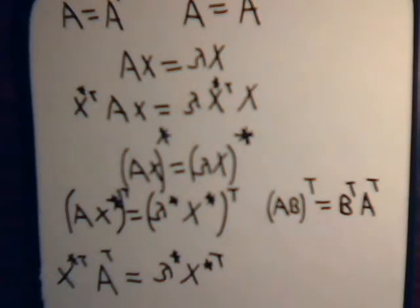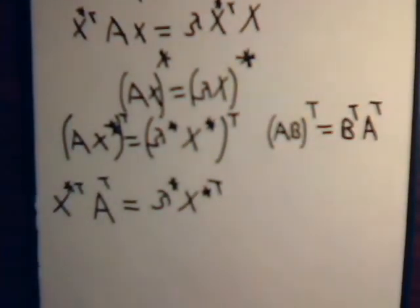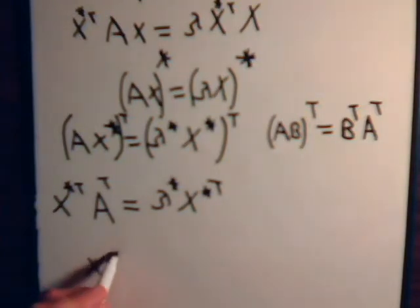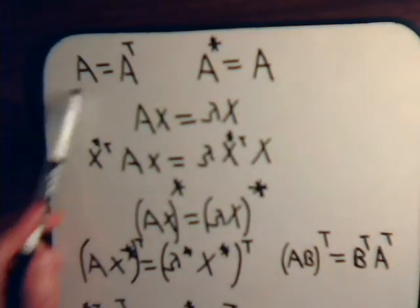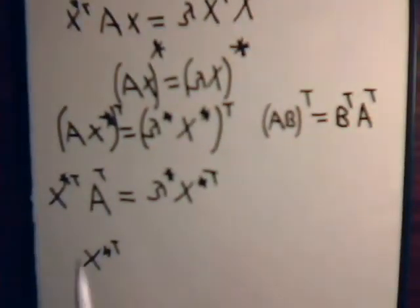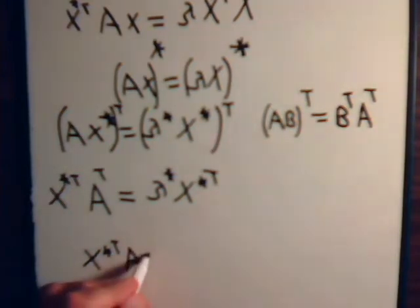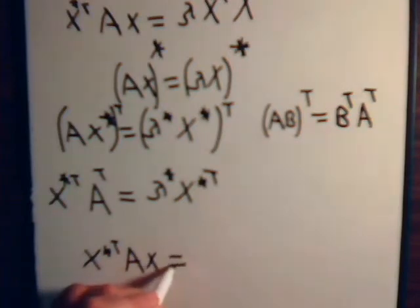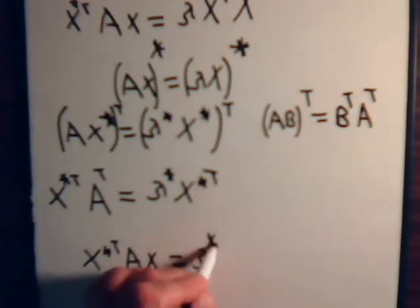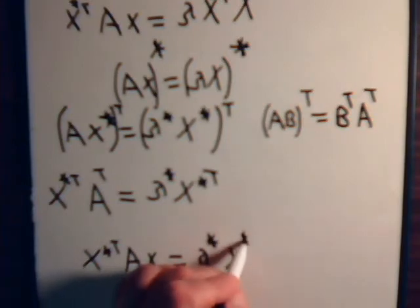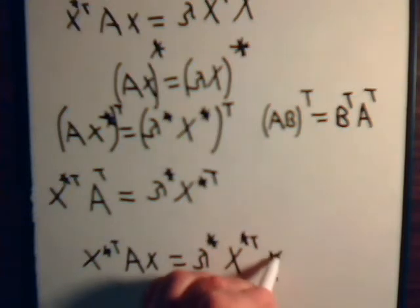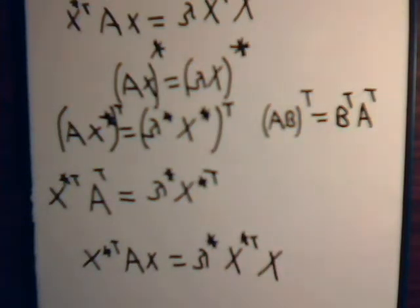Now let's multiply both sides of this equation by x. We have the complex conjugate transpose. What's A transpose? That's just A, because we're dealing with a symmetric matrix. So we can write this as A times x equals lambda complex conjugate times the complex conjugate of x transpose times x. So we have this equation.